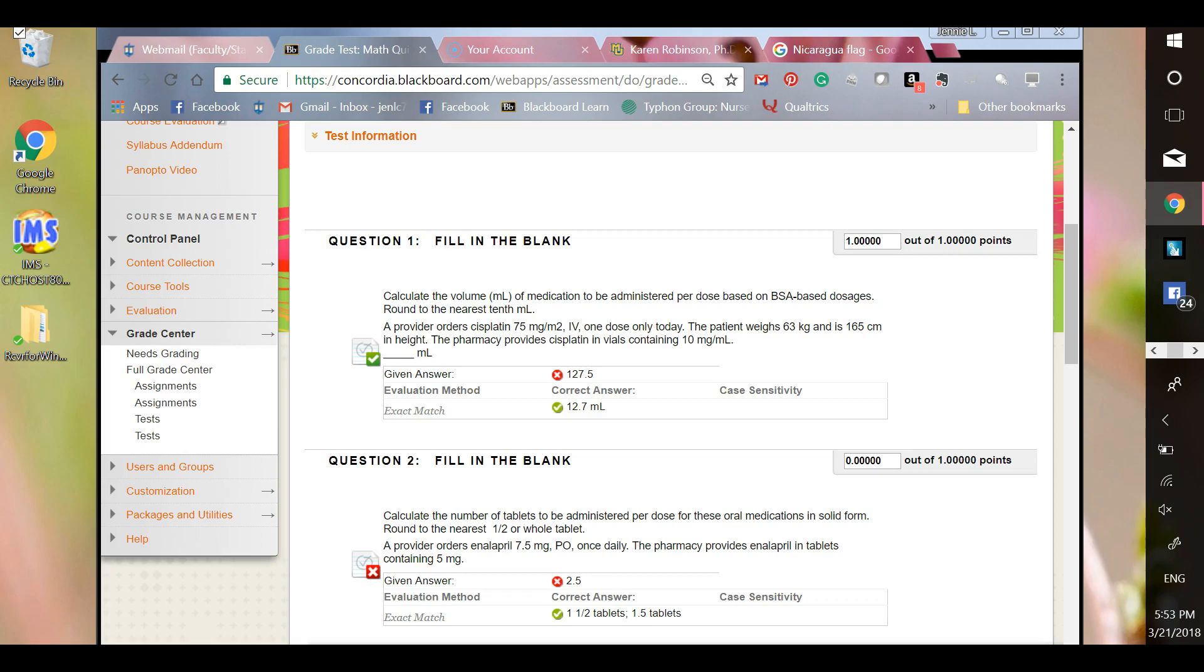So the provider orders cisplatin, which is actually a chemotherapeutic agent at 75 milligrams per meter square, IV one dose only today. The patient weighs 63 kilograms and is 165 centimeters in height. And the cisplatin vials are 10 milligrams per mL.